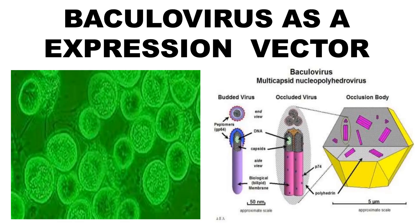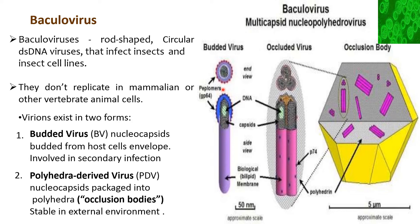Welcome to Life Science with KMD. Today I'm going to explain baculovirus as an expression vector. Baculovirus is a rod-shaped, circular double-stranded DNA virus that infects insects and insect cell lines. They don't replicate in mammalian or other invertebrate cell lines. The virus exists in two forms.